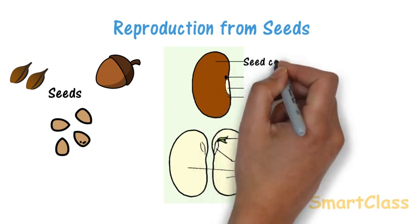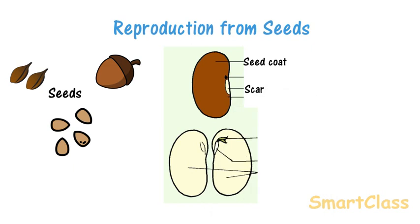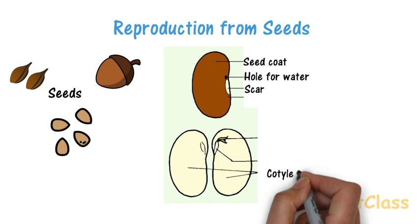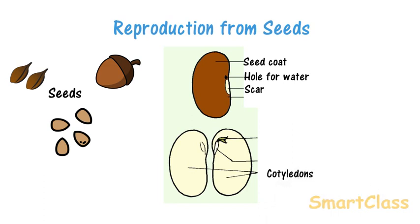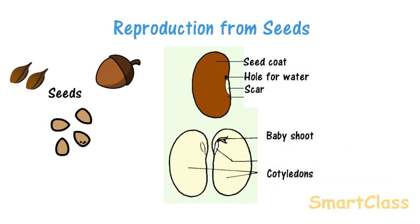A thick outer covering of a seed is called a seed coat. There is a scar on one side of the seed. This is where seed was attached to fruit. Above the scar, there is a small hole from where water is absorbed. Now, when we carefully remove the seed coat, we will see this seed has two seed leaves called Cotyledons. Between Cotyledons, there is a baby plant called the embryo. Embryo has a baby shoot and baby root. The seed leaves protect the baby plants and also store food for them.